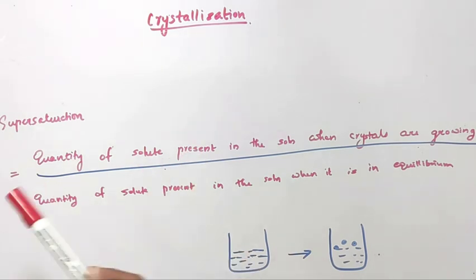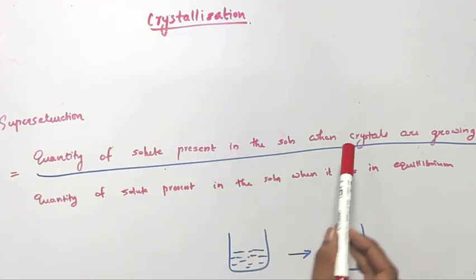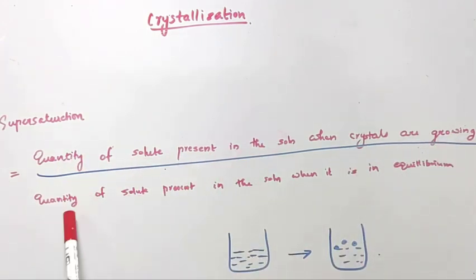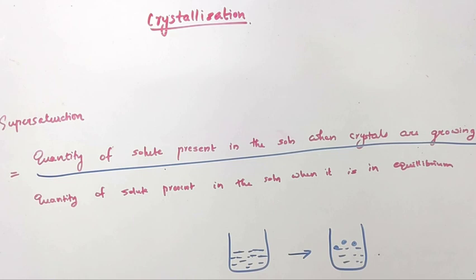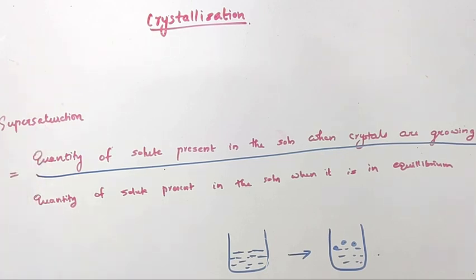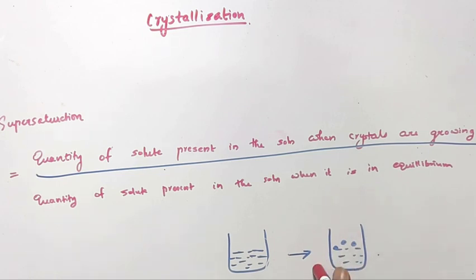We have an equation for supersaturation. It is actually considered as the ratio of the concentration of solute present in the solution when crystals are growing, divided by the concentration of solute present in the solution when it is in equilibrium. Initially we have a solution which is in equilibrium; later this equilibrium is disturbed and crystals start growing out of the solution. The equation is the ratio of the concentration at the crystal-growing stage divided by the concentration at the equilibrium stage.